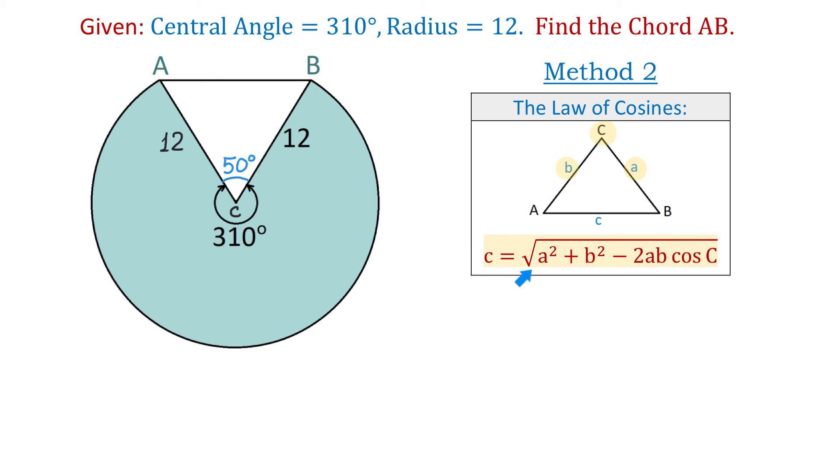Side c equals the square root of a squared plus b squared minus 2ab cosine of angle C. In our problem we also have two sides and the angle between these two sides, then we can find the opposite side of this angle by using the law of cosines.